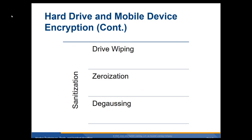Once you're done with a computer and you want to pull your hard drive out, you need to wipe the drive — erase everything on it. Zeroization is where you change it all to either zeros or ones. Degaussing is where you demagnetize it. That's how you sanitize a drive.